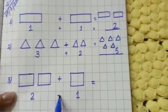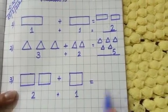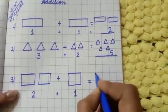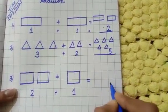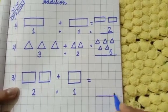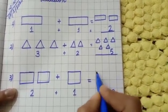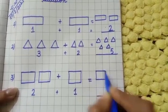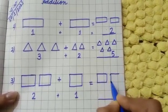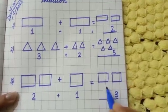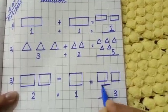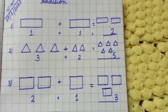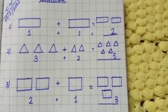Count how many squares: one, two, three. So here you will draw three squares — first write the number three, then draw three squares: this is one, this is two, and this is three.